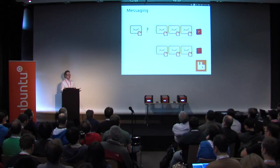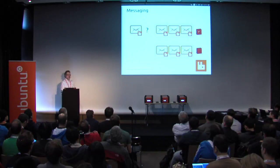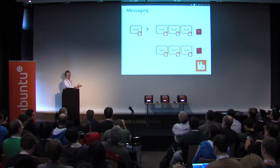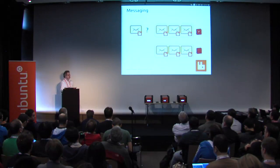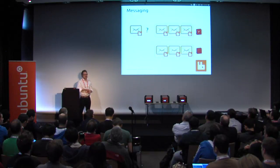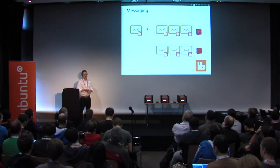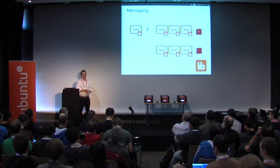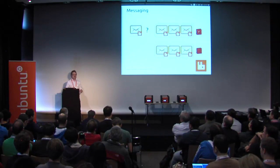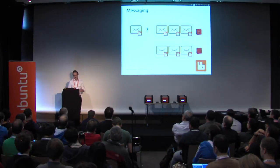There are some limitations with split brokers. Ceilometer, the metering tool, relies on notifications delivered via messaging and likes to do that on a single message bus at the moment, so supporting Ceilometer in a split broker deployment is not currently supported. In terms of security, RabbitMQ supports native SSL, and that's probably the best way to secure messaging at the moment. The OpenStack project as a whole is looking at options including encrypting the messages themselves, which makes it transport-neutral — whether it's RabbitMQ, Qpid, or any other option that comes along.